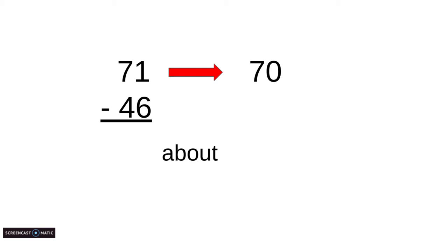Next we have 46. 46 is higher than 5. So we're going to think, is 46 closer to 40 or 50? If we did our counts, 46 would be 6 jumps away from 40, but only 4 jumps away from 50. So it is closer to 50. Now I have 70 minus 50. 70 minus 50. Let's see. 0 minus 0 equals 0. So 7 minus 5 equals 2. So my answer is about 20.